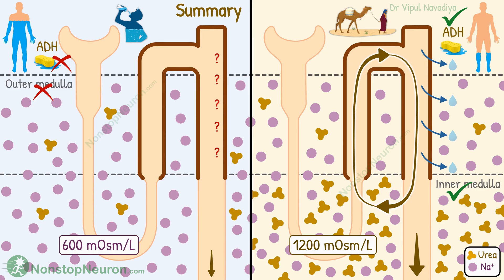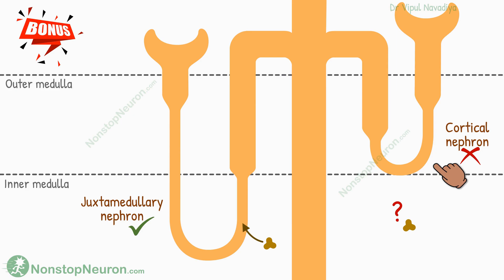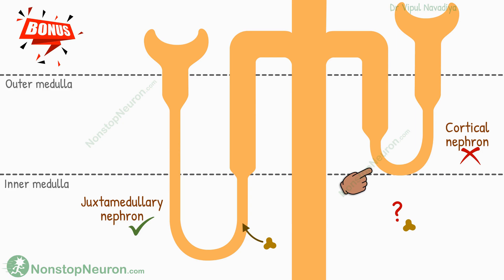That's it for urea recycling. As a bonus point — do you remember the types of nephrons? There are two types: cortical nephrons and juxtamedullary nephrons. Cortical nephrons are located more superficially. Loops from only the juxtamedullary nephrons come very deep into the inner medulla. So the secretion of urea in the thin segment occurs mainly in the juxtamedullary nephrons only. Secretion in cortical nephrons is not significant.